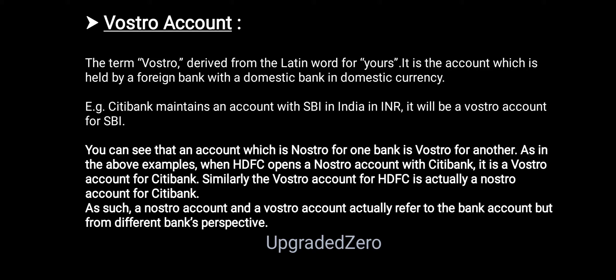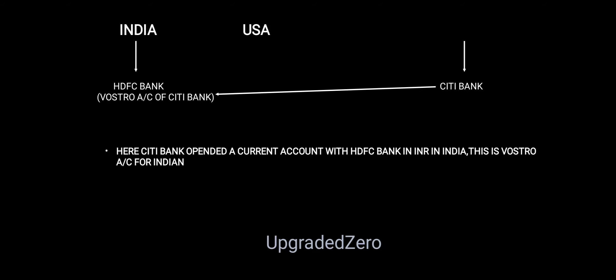Suppose HDFC Bank has maintained an account with Citi Bank USA — for us that will be a Nostro account, but from Citi Bank's viewpoint it will be a Vostro account. Second example: suppose Citi Bank maintains an account in our India at HDFC in INR — from our viewpoint that will be a Vostro account, but from Citi Bank's viewpoint it will be a Nostro account. As you can see, USA Citi Bank has maintained an account at India's HDFC Bank — that is a Vostro account for us but a Nostro account for Citi Bank. Citi Bank opens a current account with HDFC Bank in INR in India — this is a Vostro account for Indians.